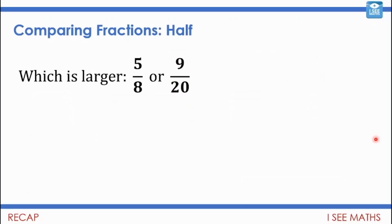We looked at which fraction is larger. We saw that five-eighths is larger than nine-twentieths even though they have bigger numbers. If we think about them in comparison to a half: four-eighths is half, so five-eighths is more than half, and nine-twentieths is less than half — so five-eighths must be more than nine-twentieths.